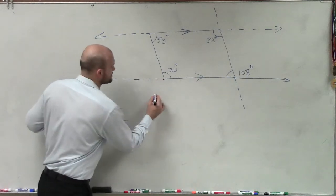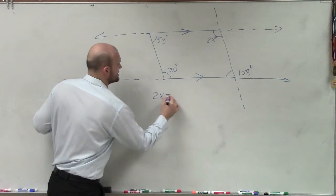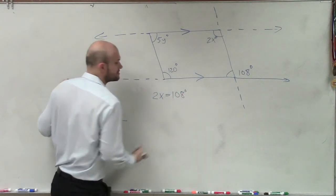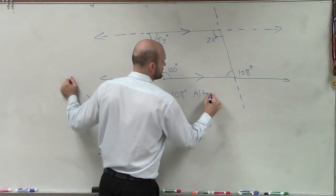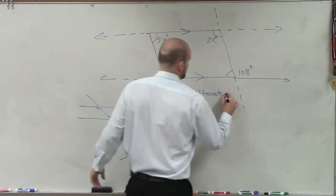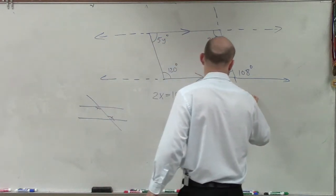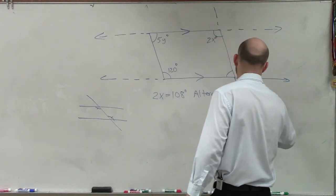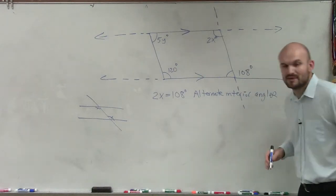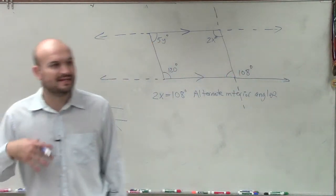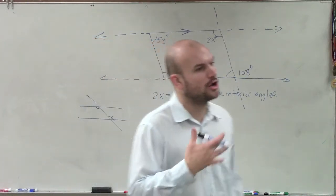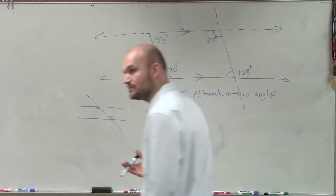So we'll just go and look at 2x is equal to 108 degrees. Why is 2x equal to 108 degrees? Because those are alternate interior angles. Do you guys remember when we did these problems, I made you write out why their relationship was? The reason I did that was to keep you guys remembering what are all these relationships? How do they all relate to each other?